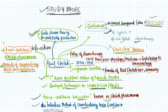Paul Ehrlich is a German scientist who founded an institute in Germany named after him. In 1908, he was awarded the Nobel Prize for his contribution to immunology in the field of physiology and medicine.